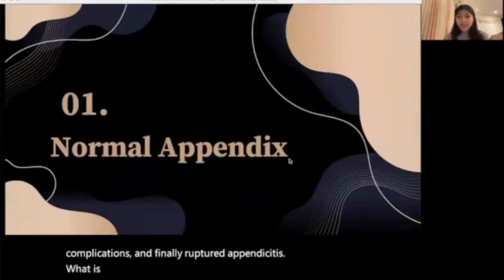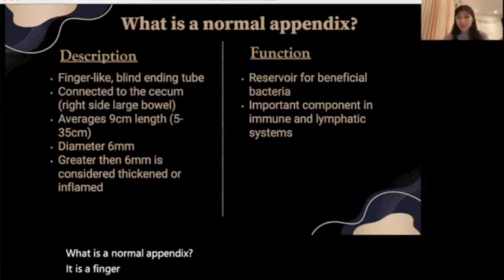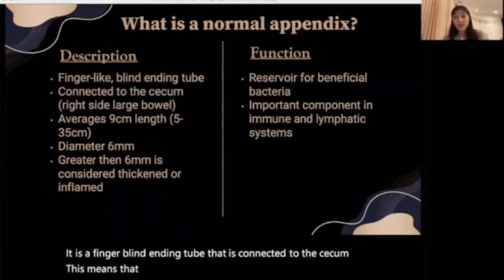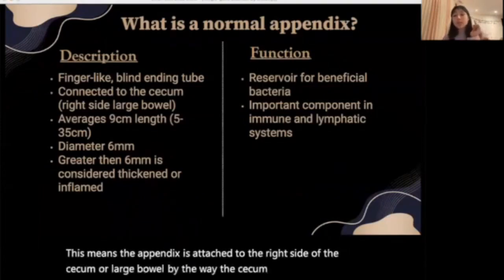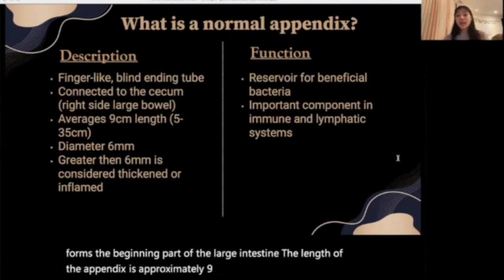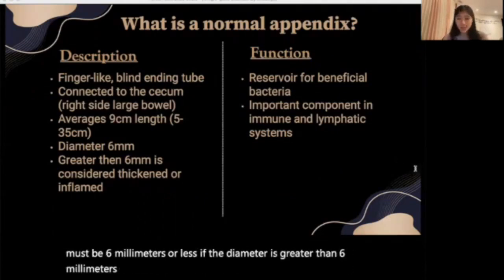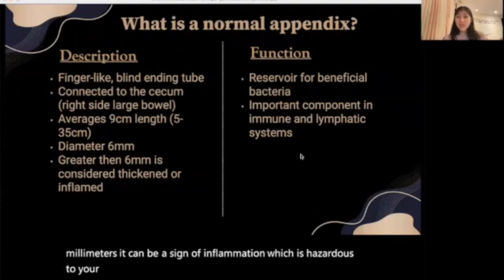What is a normal appendix? It is a finger-like, blind-ending tube that is connected to the cecum. This means that the appendix is attached to the right side of the cecum, or large bowel. The cecum forms the beginning part of the large intestine. The length of the appendix is approximately nine centimeters and the diameter must be six millimeters or less. If the diameter is greater than six millimeters, it can be a sign of inflammation, which means you have appendicitis.